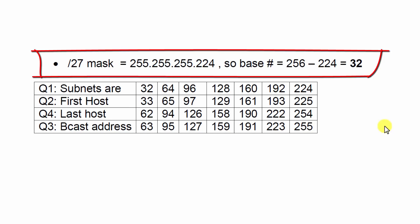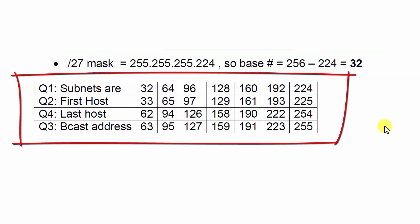For question one, the subnets are 32, 64, 96, 128, 160, and 192 and 224 because 32 is your base number, plus 32 is 64. 64 plus 32 is 96. 96 plus 32 is 128, and so on.